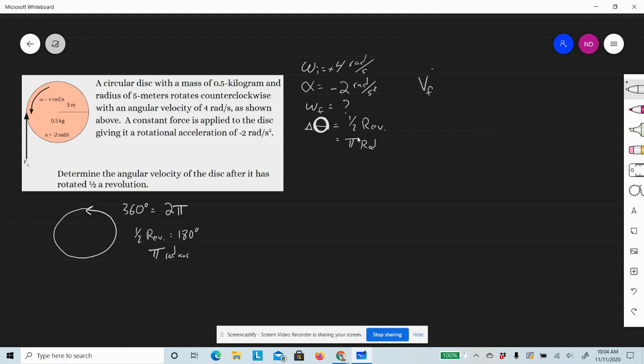We need the equation that doesn't have time. The equation you're familiar with is v_f² = v_i² + 2ad. We translate this into rotational motion: Omega_f² = Omega_i² + 2α(Δθ). This is your equation.